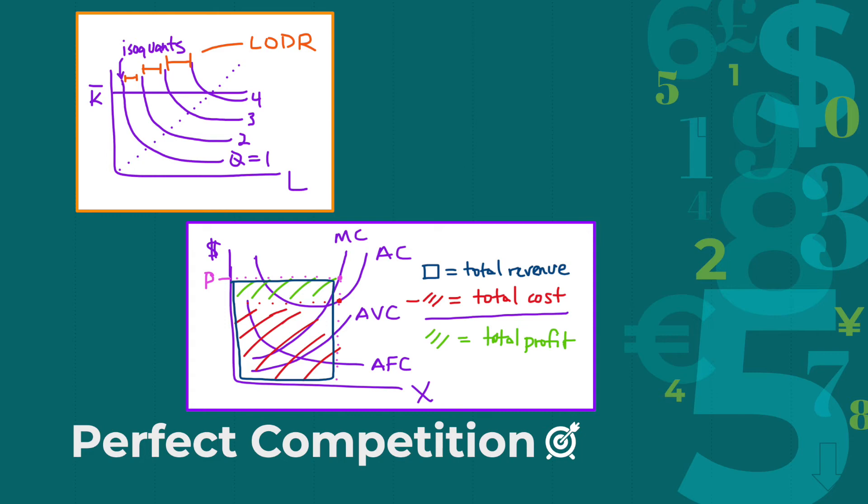This is called the marginal cost of production, and it leads us into another concept called the Law of Diminishing Returns, or LODR. LODR states that a firm's returns, or profit, will diminish as more and more units of labor are hired. This is also called decreasing returns to scale, meaning as we scale up production by hiring more labor and producing more units of output, our marginal returns decrease.